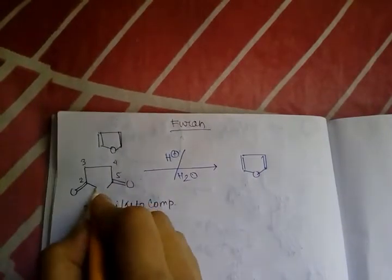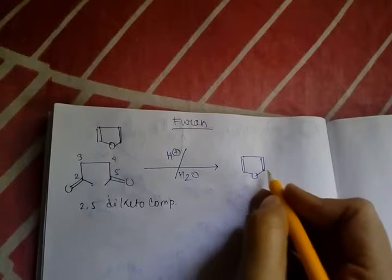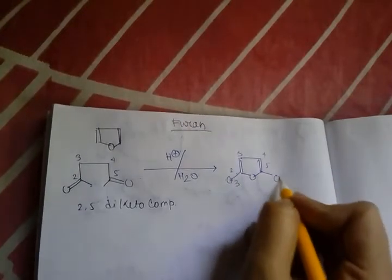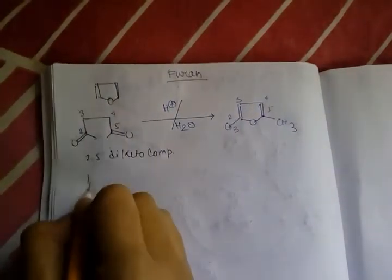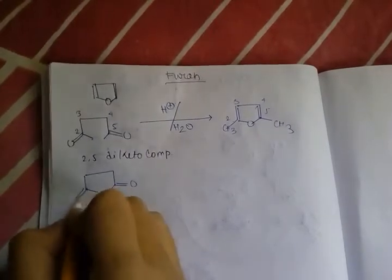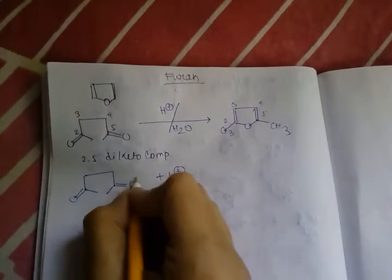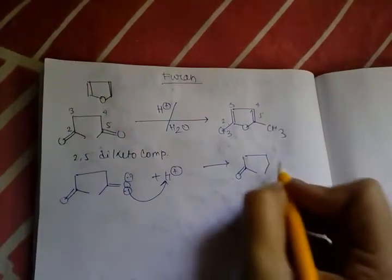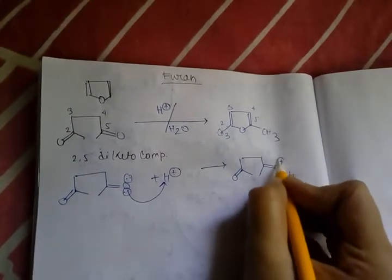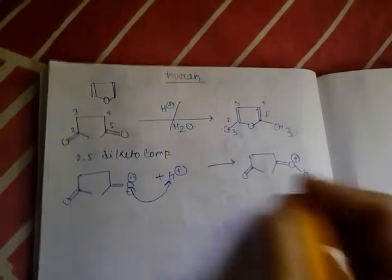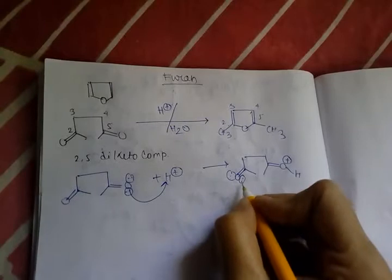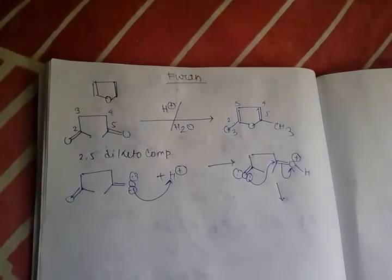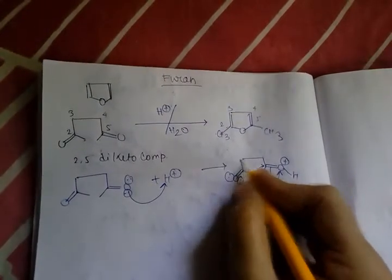In furan, at the 2 and 5 positions, CH groups are present. The mechanism is as follows: first, the oxygen will capture H+ from the medium and a positive charge will generate upon oxygen. Then the lone pair of oxygen will attack the carbon, the positive charge upon oxygen will neutralize, and ultimately a five-membered ring will form — positions one, two, three, four, and five.